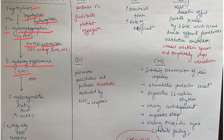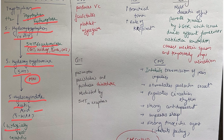This enzyme is present in the GIT, kidney, liver, and CNS. 5-HT is then converted into 5-HIAA, that is 5-hydroxyindoleacetic acid, in the presence of an enzyme called MAO. 5-HIAA is biologically inert and is therefore excreted in urine. That covers the formation and metabolism of serotonin.